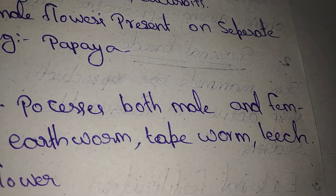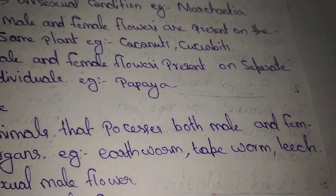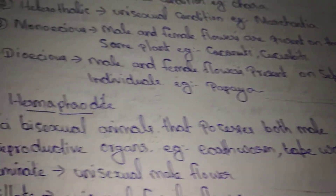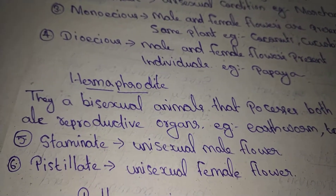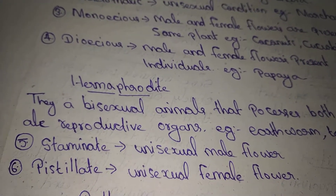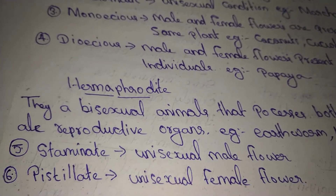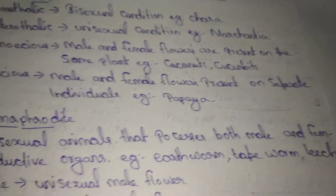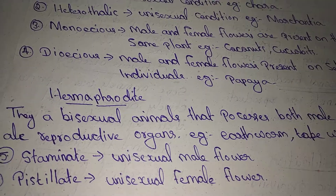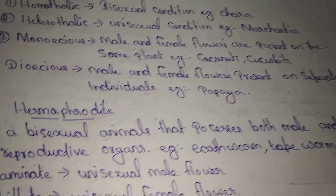Examples of hermaphrodites: earthworm, tapeworm, leech. Hermaphrodites are bisexual animals that possess both male and female reproductive organs.